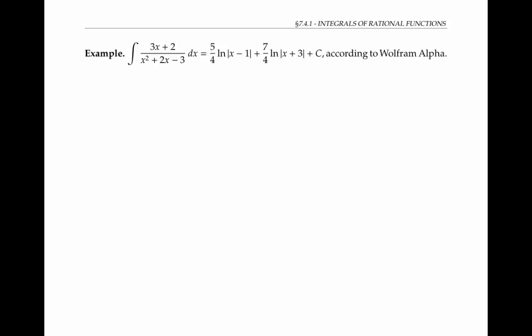According to Wolfram Alpha, the integral evaluates to this expression involving the log of x minus one and the log of x plus three. So what do x minus one and x plus three have to do with our original rational function? I challenge you to pause the video for a moment and try to figure this out. You might have noticed that the denominator x squared plus two x minus three factors into x minus one times x plus three.